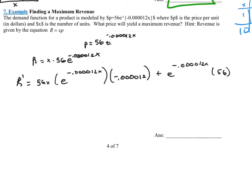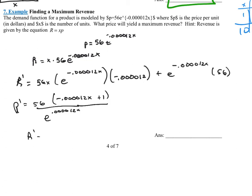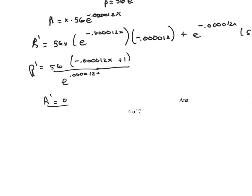So what can we factor out? We can factor out a 56 and also factor out e to the negative 0.00012x. Then on the numerator, if I factor out that 56, I'd still have a negative 0.00012x in the first term, and then I'd just have a plus one. So the derivative is equal to zero when the numerator 56 times negative 0.00012x plus 1 equals zero.